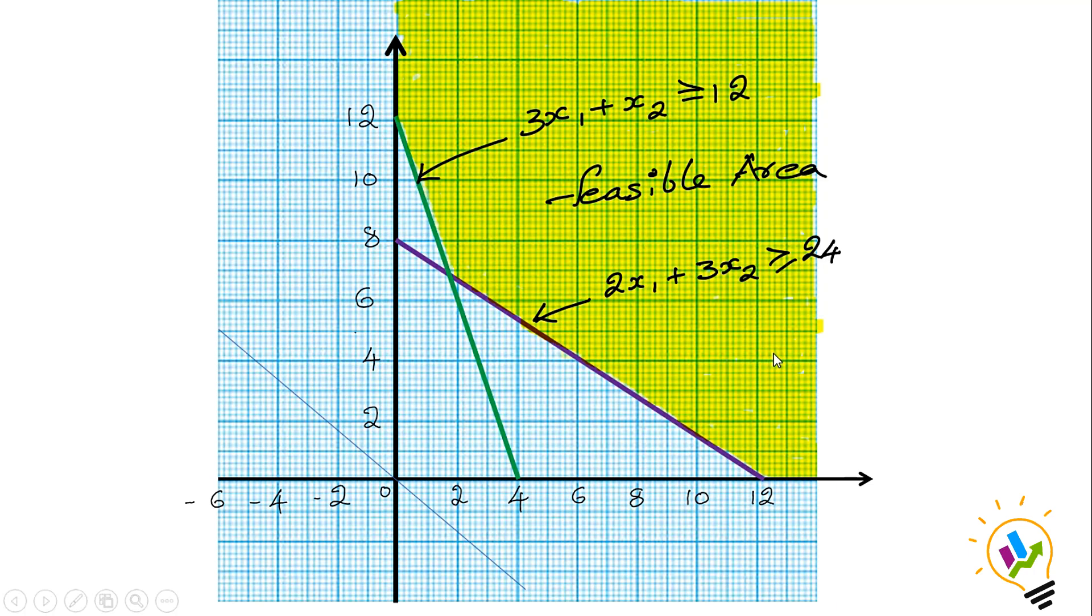This feasible area has corner points: P, Q, and R. P is (0,12), Q is (1.8, 6.8), and R is (12,0).